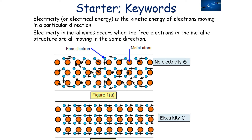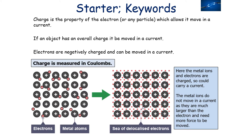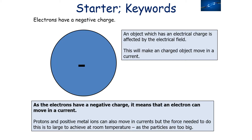Electricity in metal wires occurs when the free electrons in the metallic structure are all moving in the same direction. Charge is the property of the electron, or any particle, which allows it to move in a current. If an object has an overall charge, it can be moved in a current. Electrons are negatively charged, so they can be moved in a current. We measure charge in Coulombs. Metal ions are also charged and could carry a current, but they don't move because they're much larger than electrons, requiring much more force. Protons and positively charged metal ions could also move in currents, but the force needed is too large to achieve at room temperature.